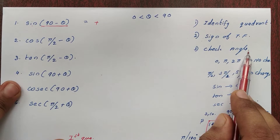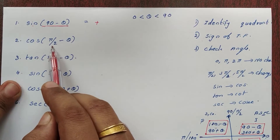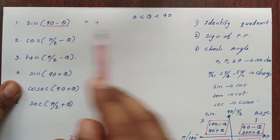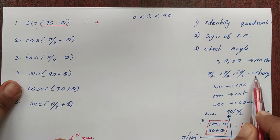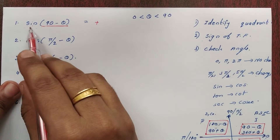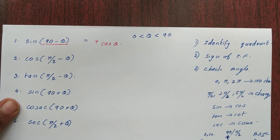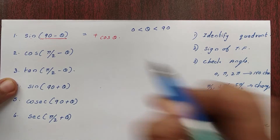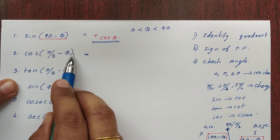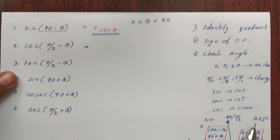The third step is to check the angle. The angle is 90, that is pi by 2. Since the angle is a multiple of pi by 2, the trigonometric function changes — sin becomes cos. Therefore, sin(90 minus theta) equals cos theta.